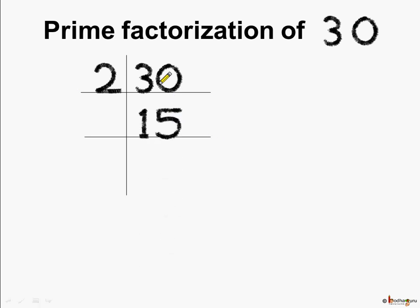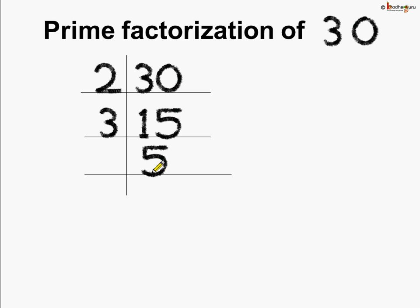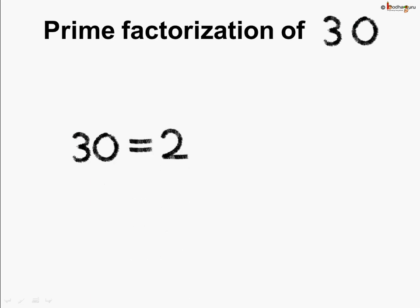2 fifteens are 30. Now here 15 is an odd number, so we will try to divide it by 3. Yes, it can be done. So 3 fives are 15. Now 5 is a prime number and it is divisible by itself and 1. So 5 ones are 5. Here is the prime factorization of 30. We can write 30 as 2 multiplied by 3 multiplied by 5.